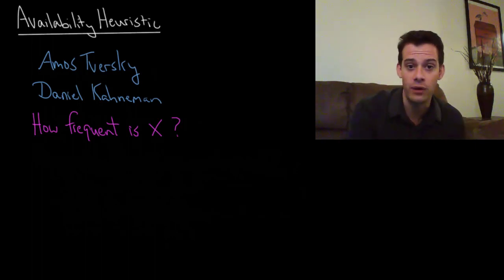Let's look at an example of one of these heuristics. This first one is the availability heuristic. The availability heuristic is something that might occur whenever we're trying to answer the question of how frequent is x? This is a hard question to answer.